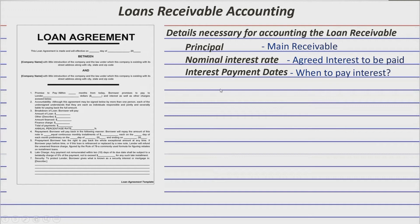Another detail you need to extract from the loan agreement is the maturity date, which is the date where the principal is normally collected. But sometimes, principal is collected little by little at multiple dates, especially in actual scenarios. In summary, this is the date where the principal and interest payments by the debtor stop. That's the maturity date.